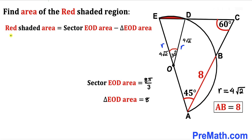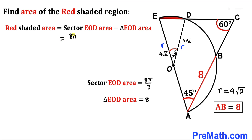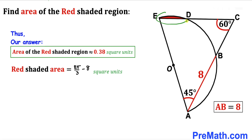In the final step, the area of the red shaded region equals the sector area minus the triangle area: 8π/3 minus 8, which is approximately equal to 0.38 square units. Thanks for watching and please don't forget to subscribe to my channel for more exciting videos.